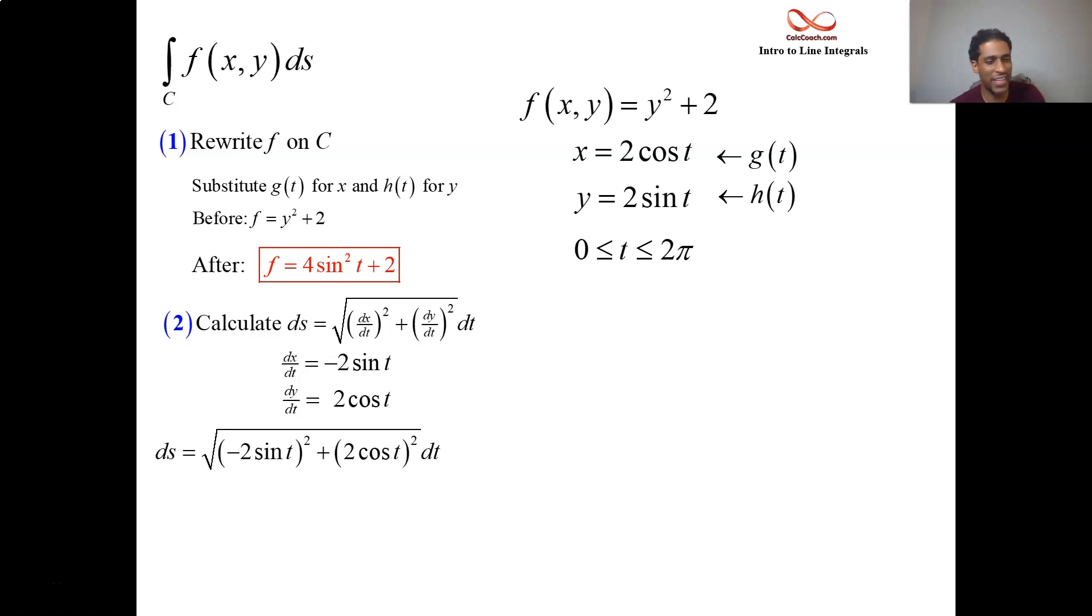What's nice is we get a sine squared plus cosine squared and that's a 1 and so it's really the square root of 4 times 1 or square root of 4 dt. So it's really ds is equal to twice dt.